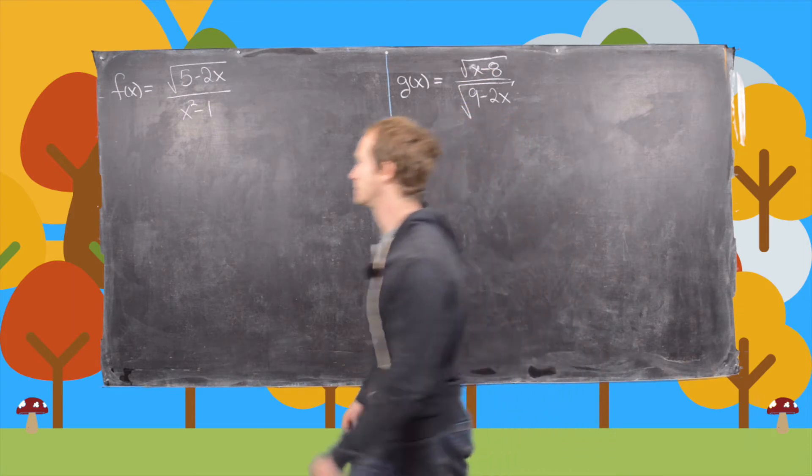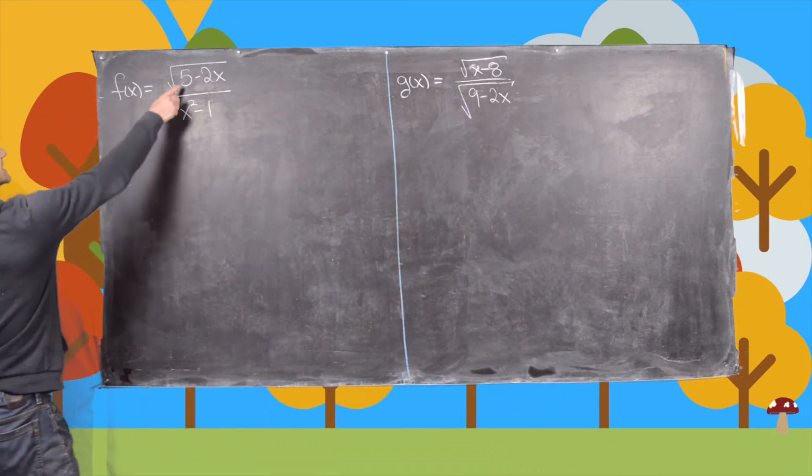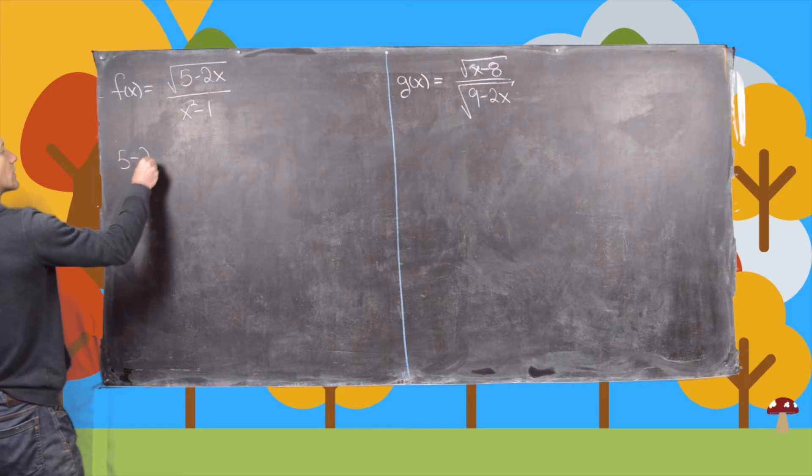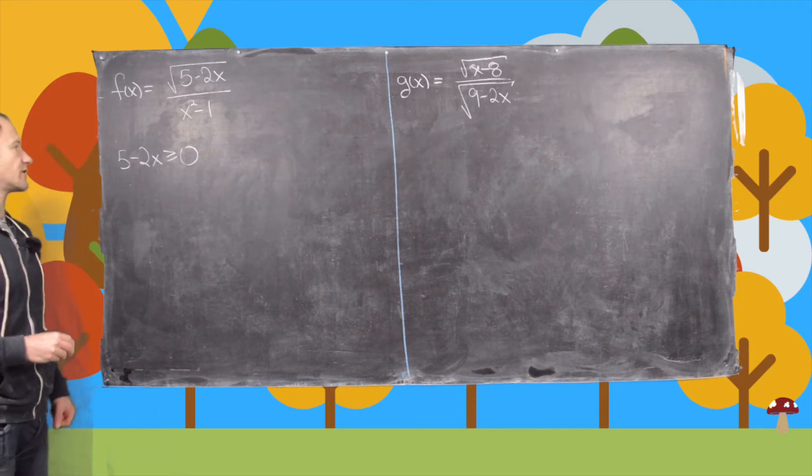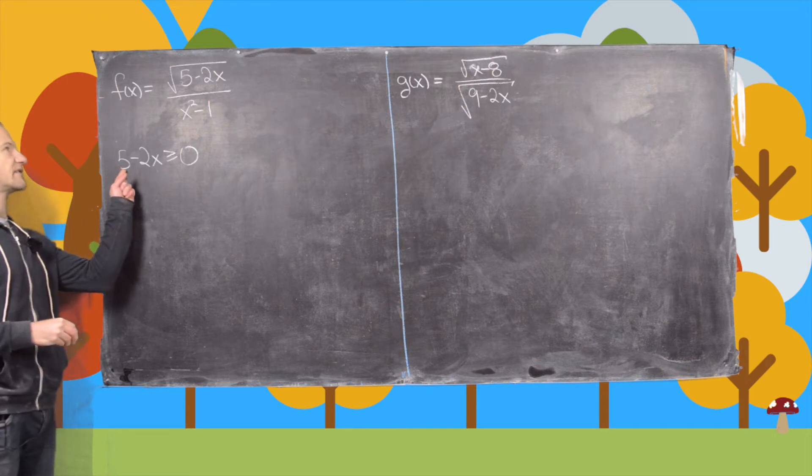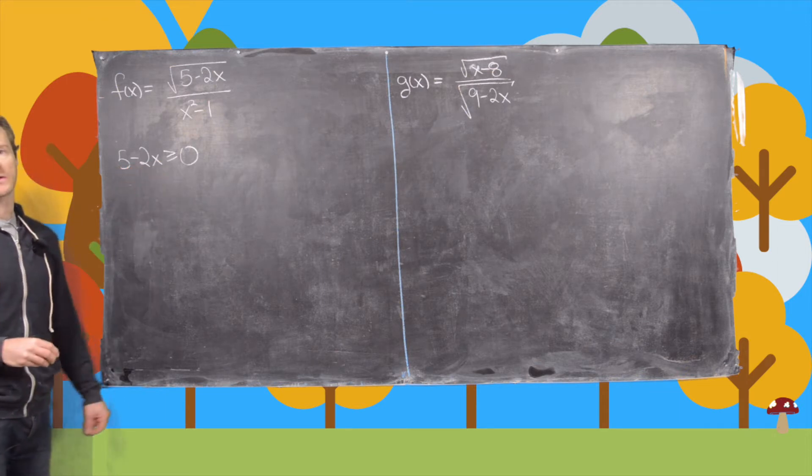So let's look at this first one. The first thing that we need to see is that we have a square root here. So we want to make sure that all of the stuff under the square root is always bigger than or equal to zero. So we'll set 5 minus 2x bigger than or equal to zero.